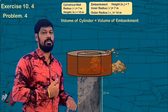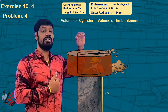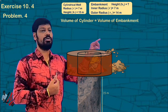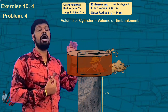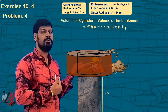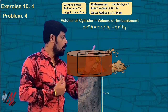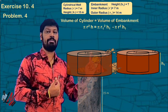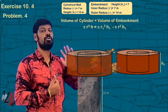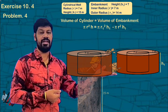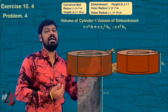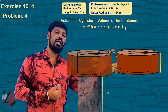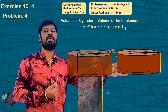The well is in cylinder shape. The embankment is in the shape of a cylindrical pipe or cylindrical ring. Pi R² H is the normal cylinder formula. The embankment is a 3D figure — like a white pipe, one cylinder inside another. The height is common and the radius is different. So the volume of embankment equals the outer cylinder volume minus the inner cylinder volume.